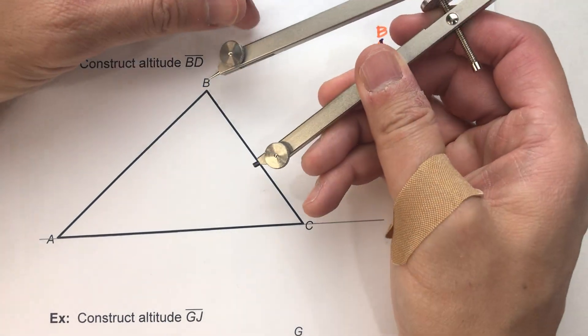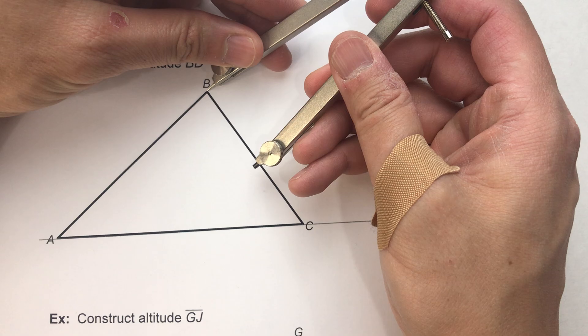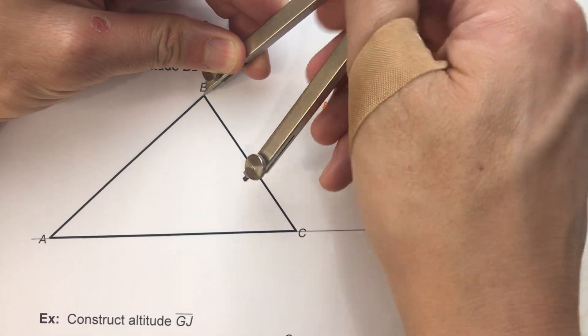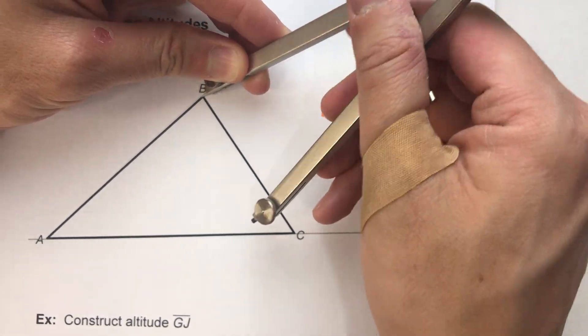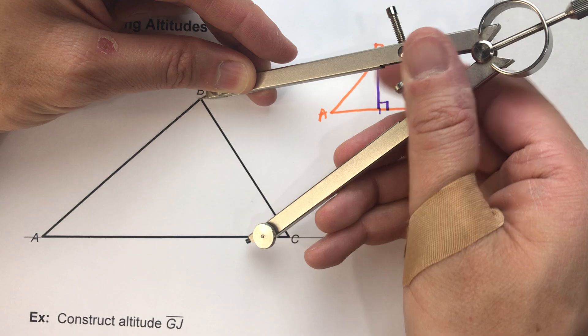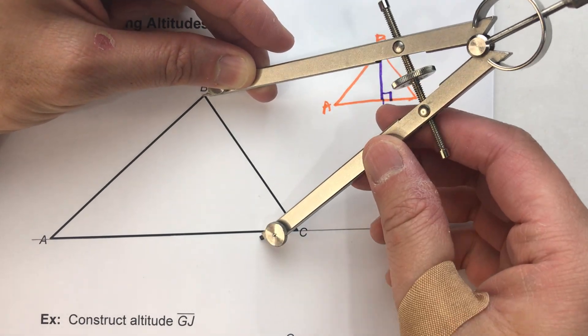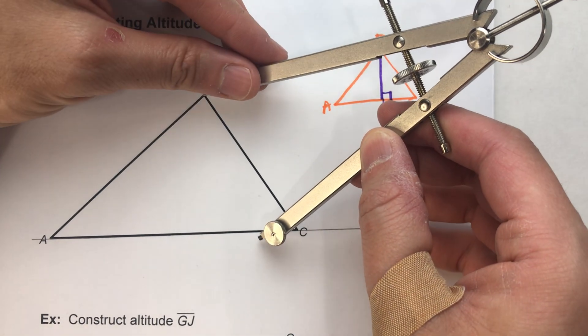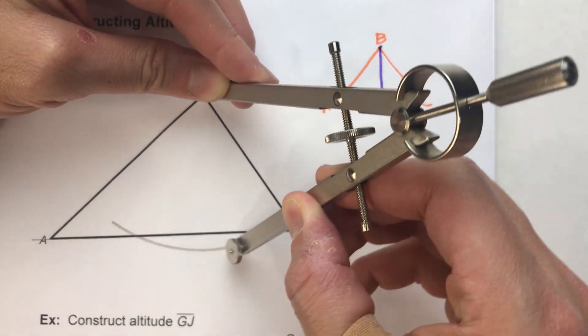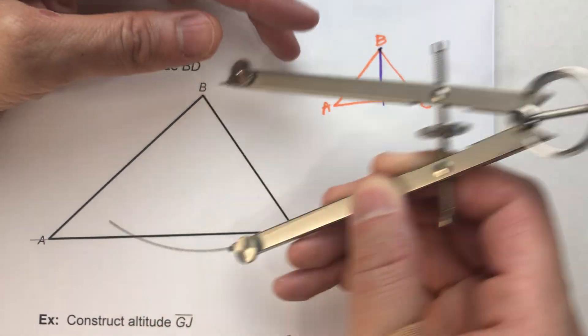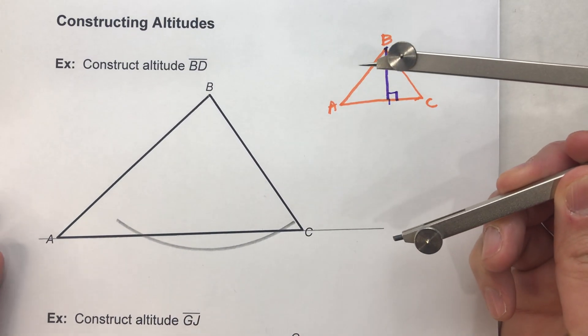Now I'm going to use my compass setting from point B and I'm going to make it long enough so that it hits that line segment in two different places. So that looks pretty good. So I'm going to swing my arc and hit it in two spots.